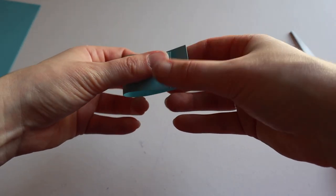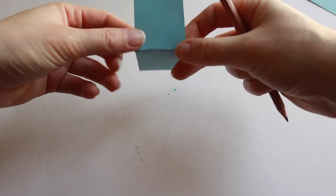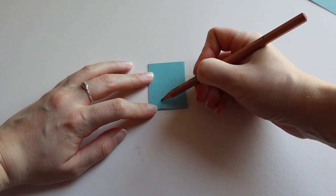Fold in half again. Keeping the piece of card folded, draw a straight arm with the top at the folded edge and the hand at the open edge.